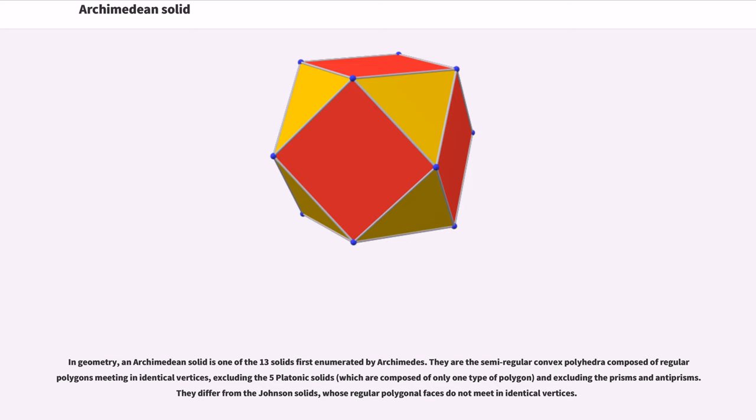Excluding the five Platonic solids, which are composed of only one type of polygon, and excluding the prisms and antiprisms. They differ from the Johnson solids, whose regular polygonal faces do not meet in identical vertices.